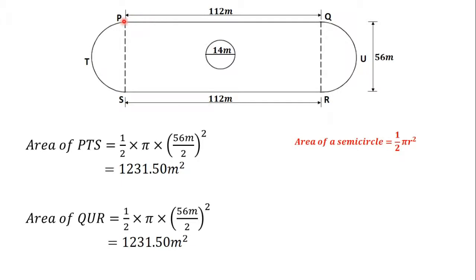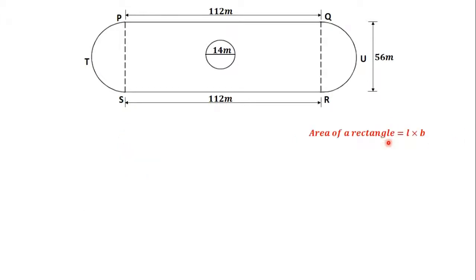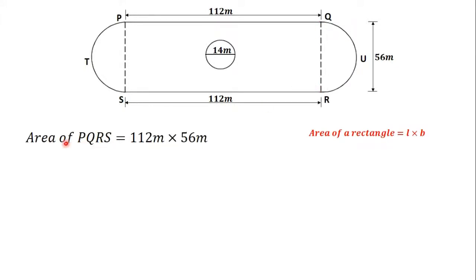We need to find the area of the rectangle PKRS. We know that the area of a rectangle is equal to length times breadth. The length of the rectangle is 112 meters. The breadth is 56 meters because the side KR is 56 meters. So the area of PKRS equals 112 meters times 56 meters, which gives us 6272 meters squared.